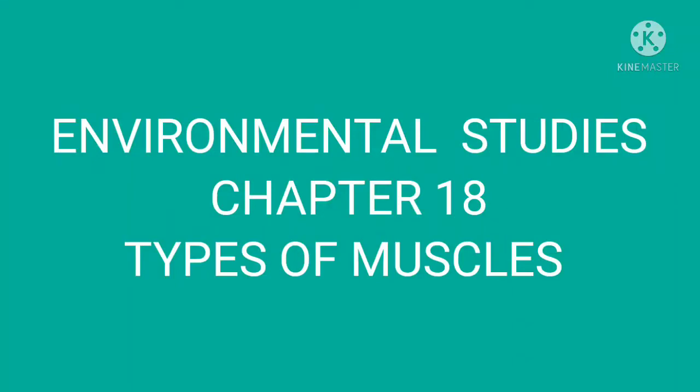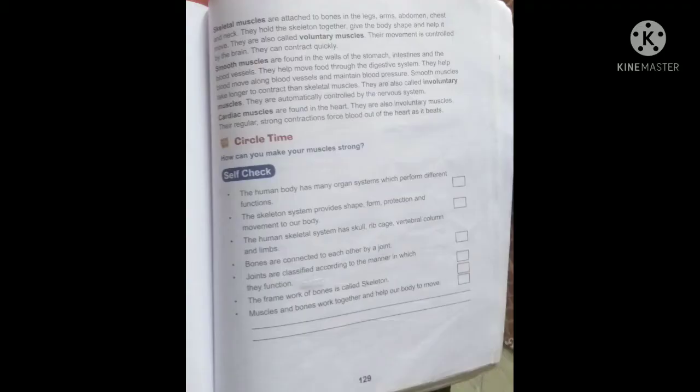Today we will discuss the types of muscles. In the previous class we discussed that muscles always work in pairs. Our muscles work in pairs on the contraction and relaxation principle — one contracts and one relaxes.